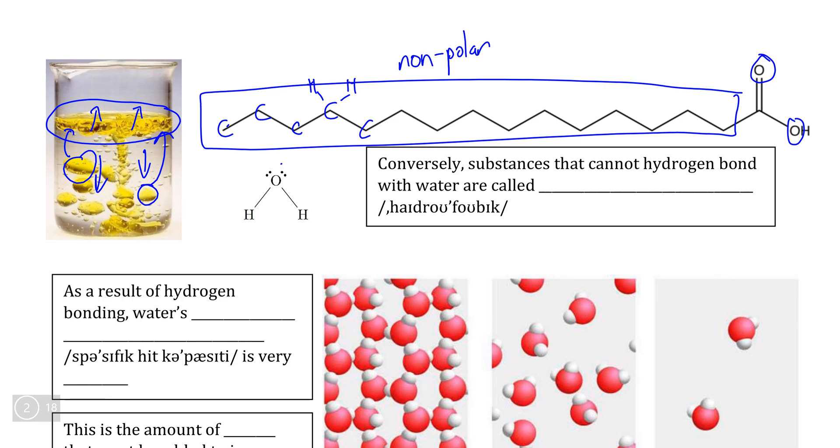Meaning that this section is not able to form hydrogen bonds with water, and therefore we say that it dislikes, or more scientifically, that it fears water. The reason why we use the word fear there is because a substance that is not able to hydrogen bond with water is defined as hydrophobic, and phobic is derived from the Greek word phobia, meaning fear.